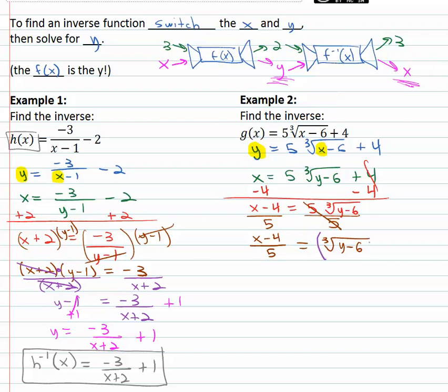Still trying to get the y alone, we want to get rid of a cube root. The opposite of taking a root is to take a power. We'll do the third power on both sides as third power and third root are inverses. We now have x minus 4 over 5 cubed is equal to y minus 6.